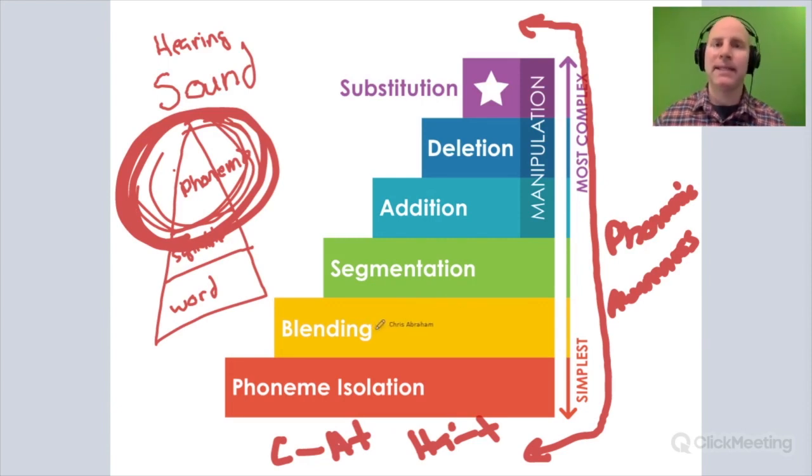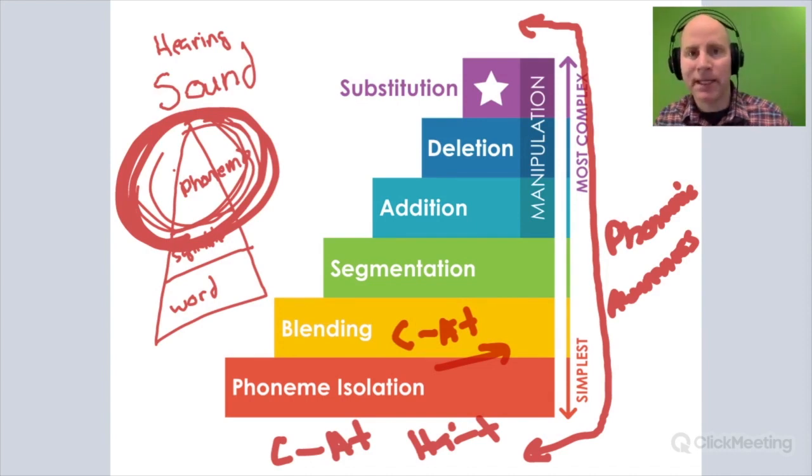Then we have blending and segmenting. This is when a child is able to take a word like cat and say it's made up of /k/-/a/-/t/, cat. So here I did both: I segmented the word /k/-/a/-/t/, then blended it back together to cat. This is a very important skill, segmenting and blending words.